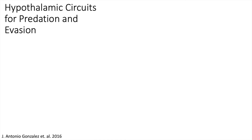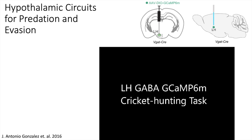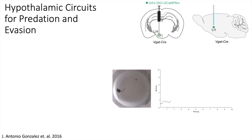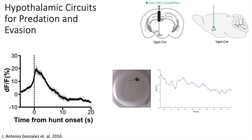As another example, this study also targeted the lateral hypothalamus, but was instead interested in the role of neurons that contain the neurotransmitter GABA in predatory behavior. The authors injected GCaMP into the lateral hypothalamus of VGAT-Cre mice. The mouse explores the chamber along with a cricket. When the mouse recognizes the cricket, it swiftly chases and consumes it. You can see the calcium activity sharply increase when the mouse begins the chase. This suggests that GABA neurons in the lateral hypothalamus are involved with predation.